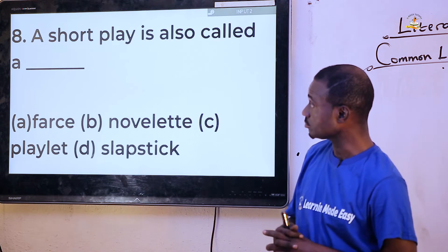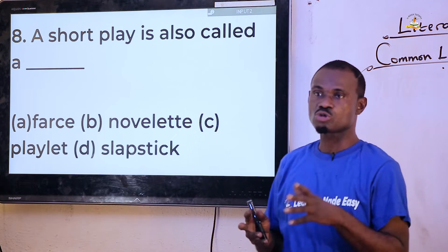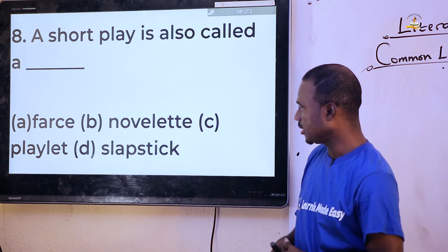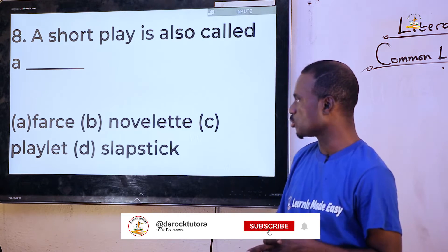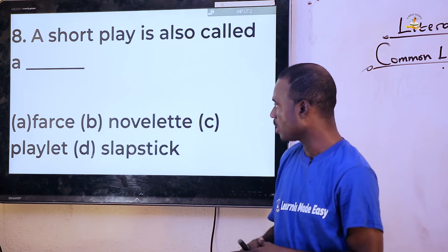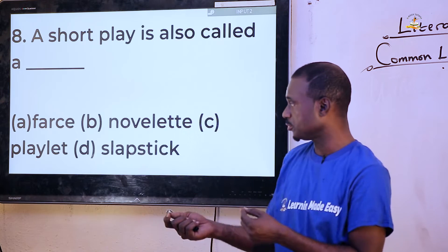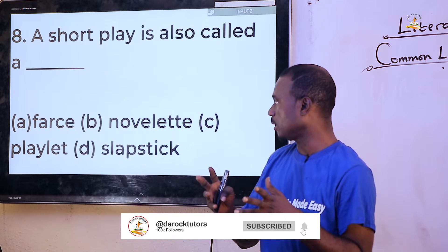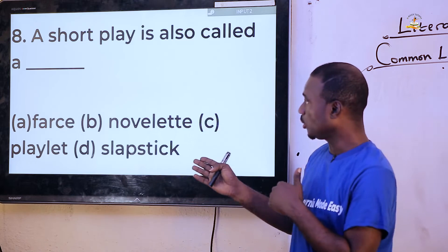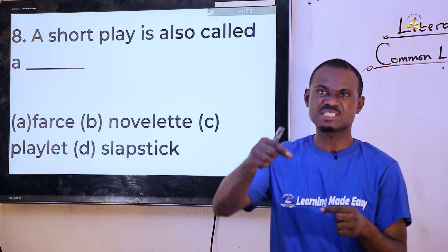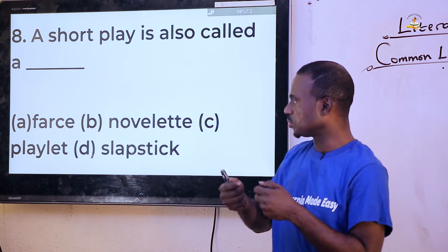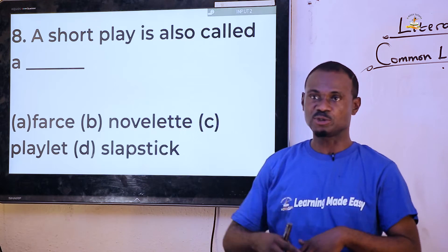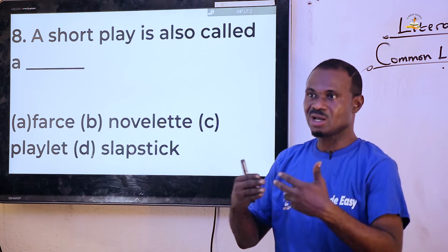Question eight: 'A short play is also called dash.' Options are farce, novelettes, playlet, and slapstick. You cannot go for farce even though it is a form of drama, not playlist, not slapstick. The answer is playlet, which is just a sub-form of a major play. Novelettes are for novels, while farce and slapstick are forms of drama.